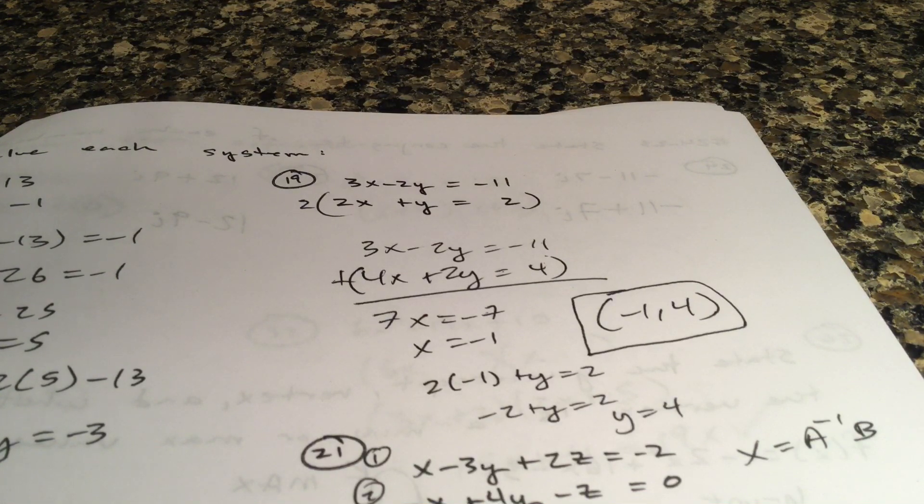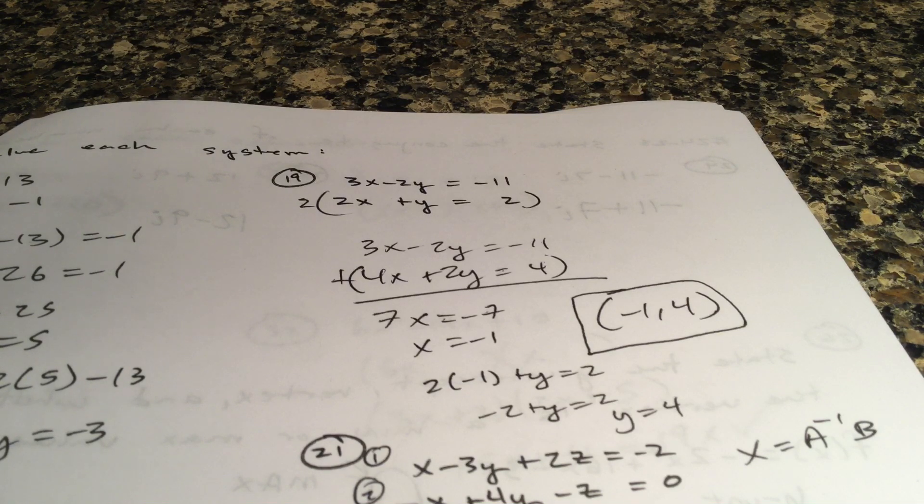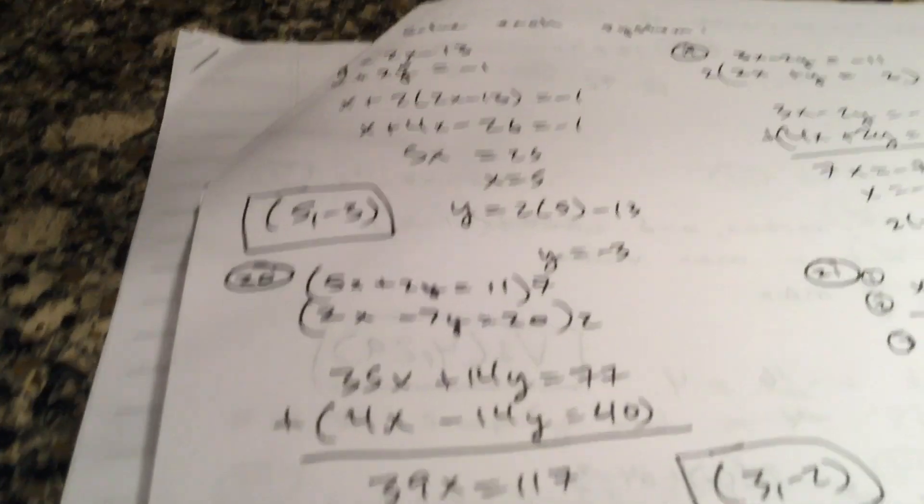I think you should do elimination, double the bottom equation, then add. You have negative 2y, positive 2y, add the equations together. You get x is negative one, plug it in maybe to the bottom equation, y is four.